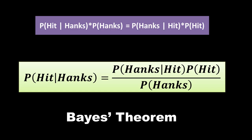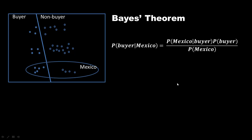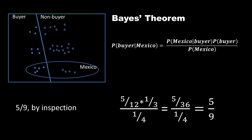Now we still have to consider the relevance of Bayes' theorem to everything we are talking about. But before we do that, let's look at another example — going back to the problem we've been looking at earlier. Suppose we want to calculate, given that a person is Mexican, what is the probability of the person being a Bayer? We already know that's 5 by 9, which we can get by inspection just by looking at the number of dots in that region. We can also apply Bayes' theorem: probability of Mexico given Bayer multiplied by probability of Bayer divided by probability of Mexico. We plug in all the numbers and get the same answer, 5 by 9.